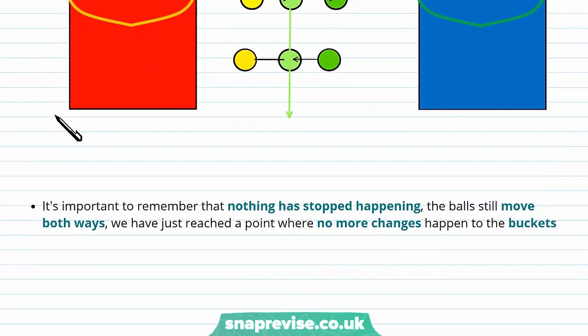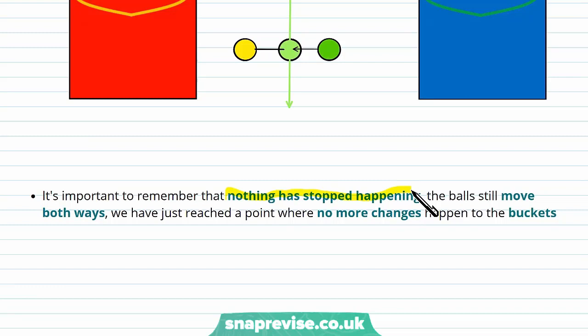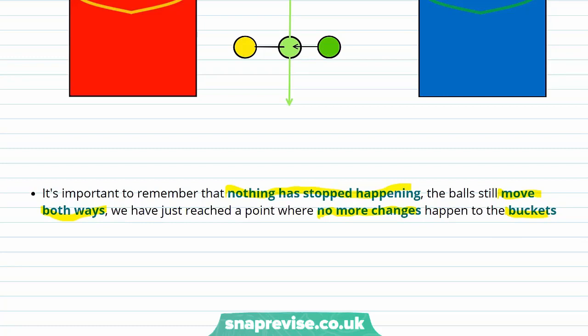It's important to remember that nothing has stopped happening here. The balls are still being taken out and put into both buckets — they're moving both ways — but we have reached a point where no more changes happen to the buckets. This matches up to how in reversible reactions, the chemicals are still being exchanged both ways through the reaction, but the products and the reactants remain at the same concentration.